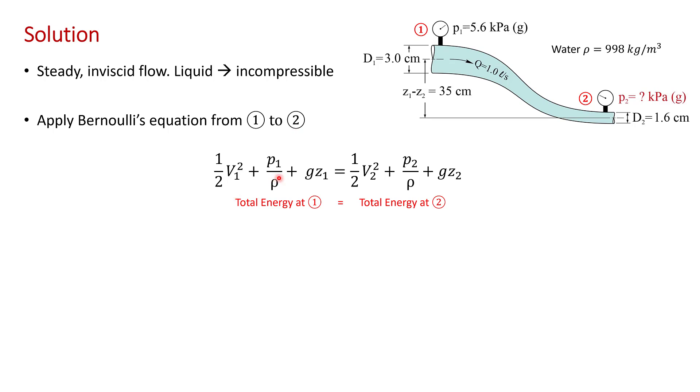so the kinetic energy per unit mass, the work done by pressure per unit mass, and the gravitational potential energy per unit mass of the flow. So what we're doing in this equation is setting the total energy at the inlet equal to the total energy at the outlet, because there are no losses.